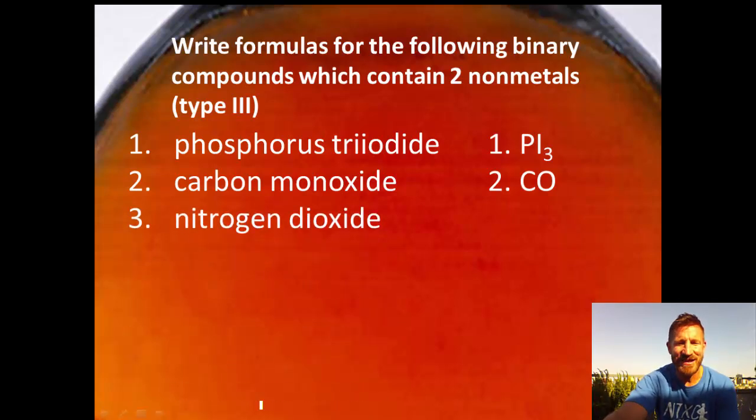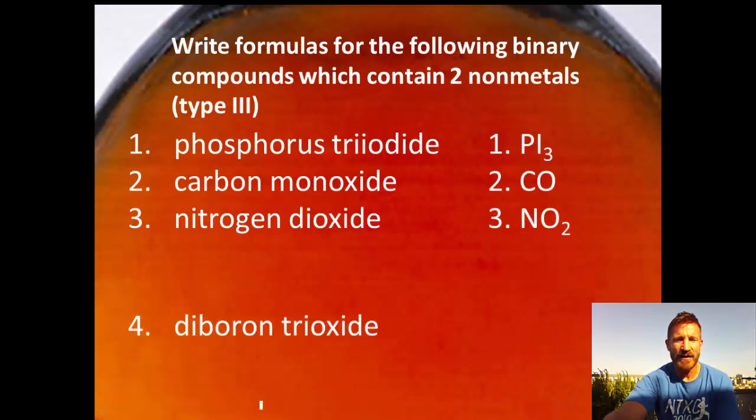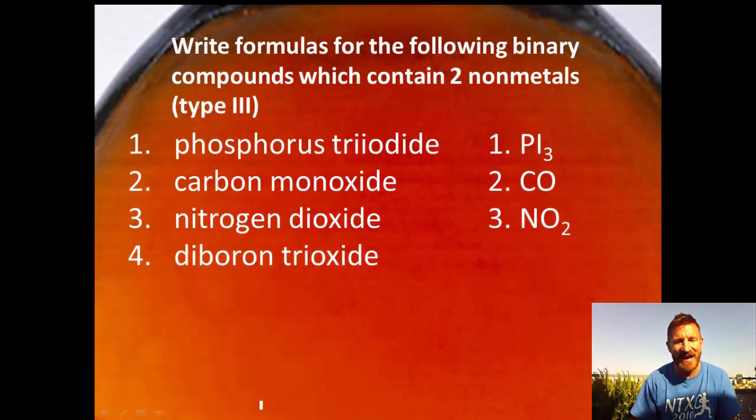Nitrogen dioxide: there's only two oxygens, one nitrogen, so this would be NO2. Next, diboron triiodide: di means two, so B2. Tri means three, so O3 - B2O3.